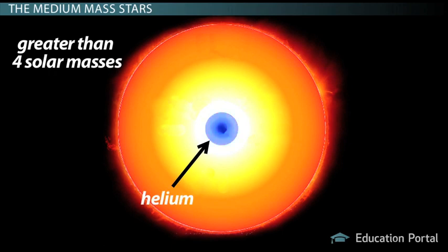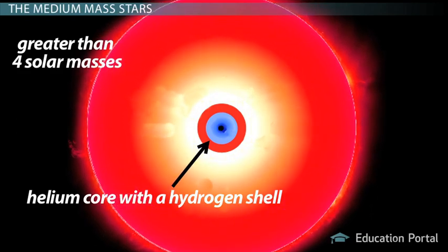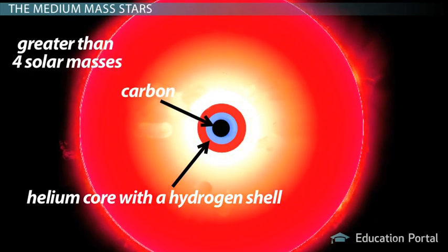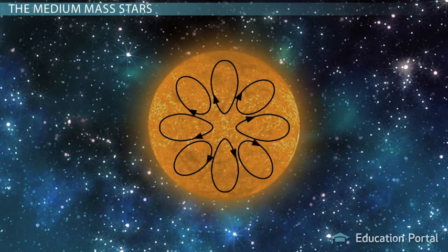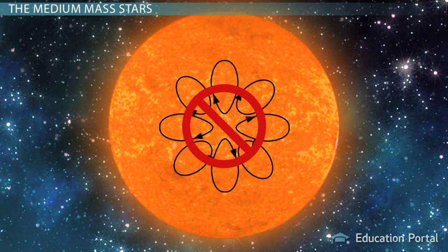This helium is then converted into carbon fuel, but stars with less than four solar masses can't ignite the carbon because they can't get hot enough to do so. Compared to red dwarfs, medium mass stars are either not mixed by convection at all or are very poorly mixed by small amounts of convection.